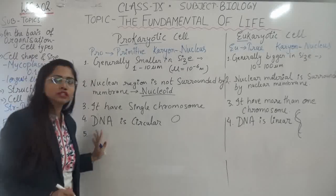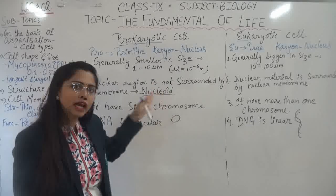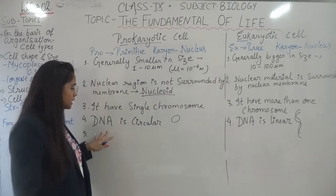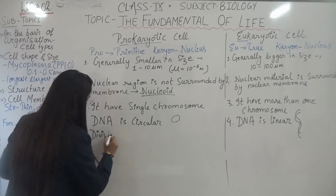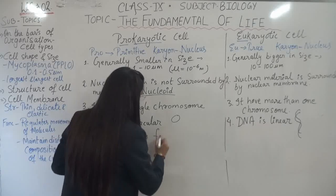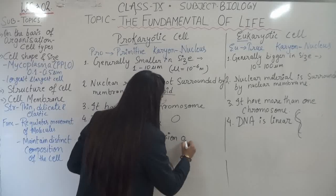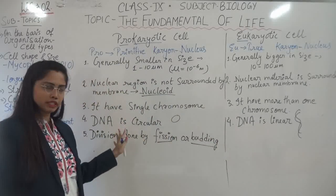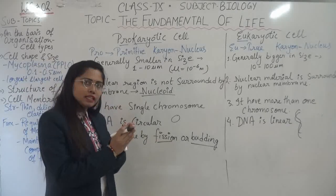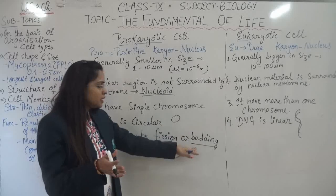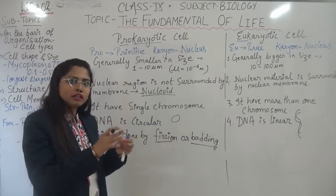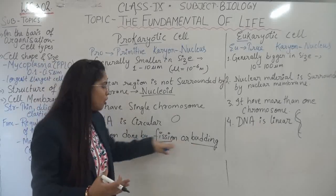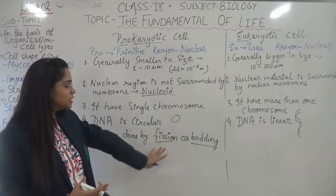Now what about the division — how will division take place in prokaryotic or eukaryotic cells? In prokaryotic cells, the division is done by fission or budding. Fission means one cell getting divided into two daughter cells. Budding means an extra outgrowth in the body of the parent cell — that outgrowth comes out, detaches from the parent, and forms a new individual. These simple types of divisions are observed in prokaryotic cells.